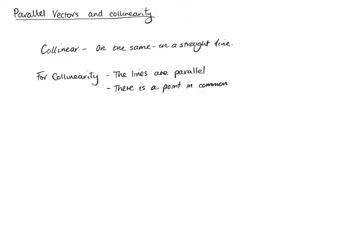The other thing you need is there to be a point in common. As long as the lines are parallel and there's a point in common between the two vectors, then they are collinear. One of the really important things — which I will stress over and over again as we do the examples — is that you need to write a sentence at the end. You can't just do the work and leave it; you need to explain and state your answer.